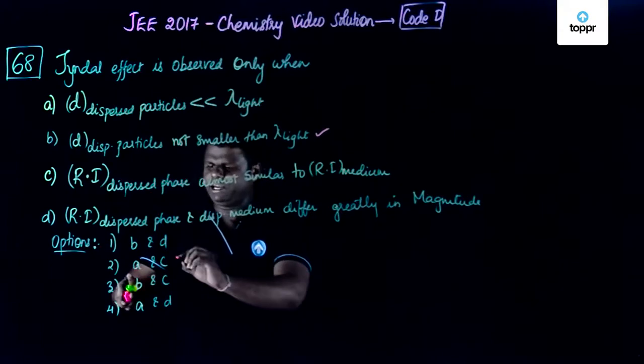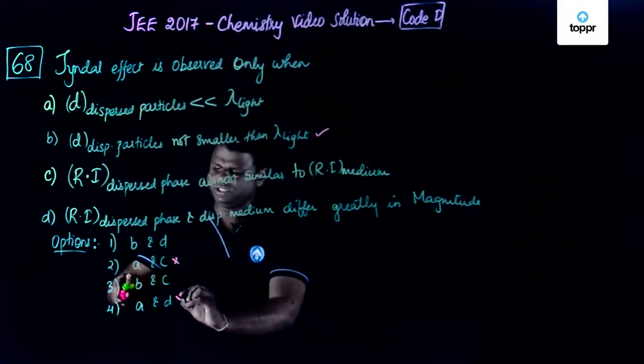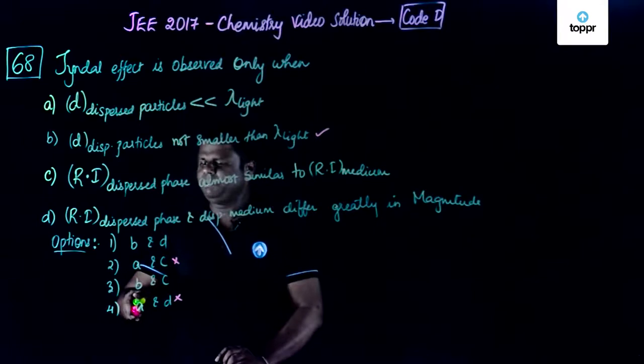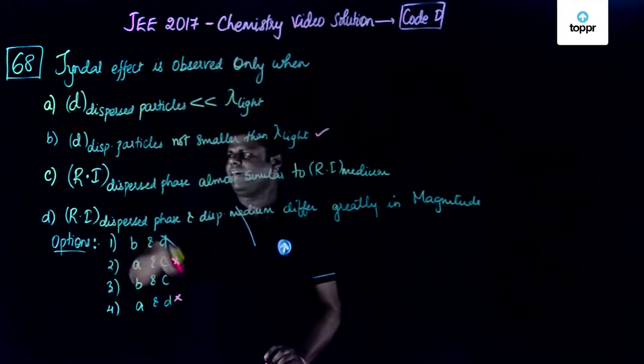That means we would eliminate options 2 and 4, so either it could be B and D or B and C. Now let's have a look at C.